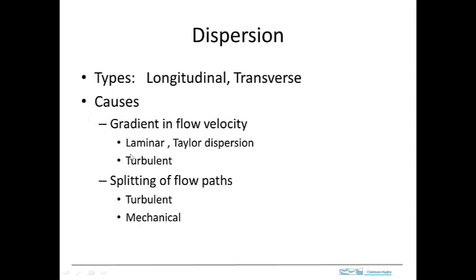There are two main causes for dispersion. One is a gradient in flow velocity. In flow in a pipe, the flow right along the wall is slower than the flow in the center. So if we start off with a uniform slug of some concentration, it's going to tend to get spread out in the direction of flow because the flow in the center of the conduit is going faster. This may also happen as a result of turbulent eddies. Another process is the splitting of flow paths, as we saw with the static mixer.